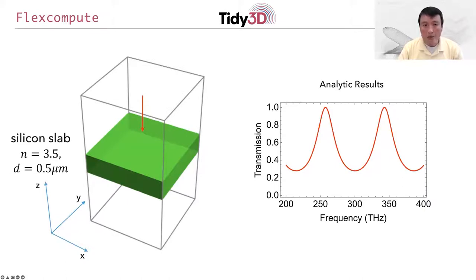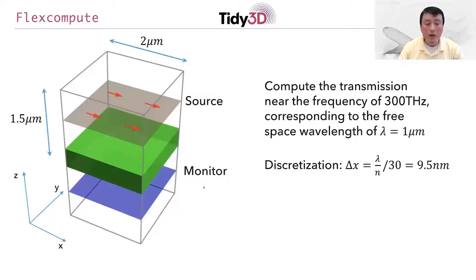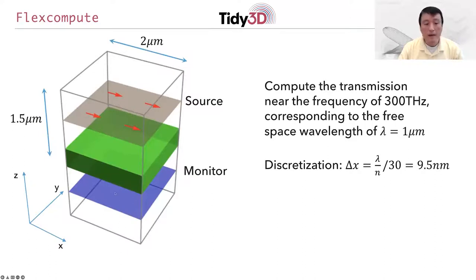To start any FDTD simulation, the first thing you need to do is to set up the computational cell, or the computational domain. In our case, we will put the silicon slab in the middle of the computational domain. We will add some free space below and above the silicon slab so that we can accommodate the source and the monitor on either side of the silicon slab. We choose about 1.5 microns, which corresponds to about one and a half wavelengths of free space, below and above the silicon slab.